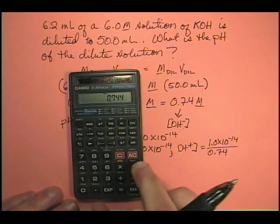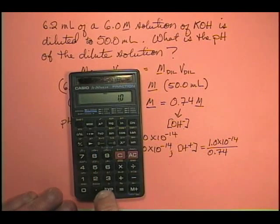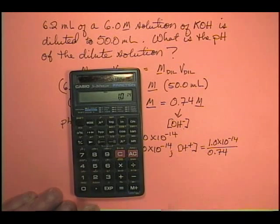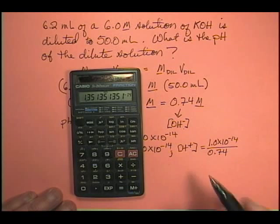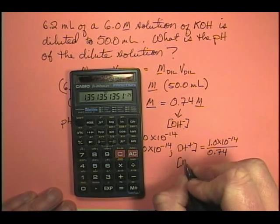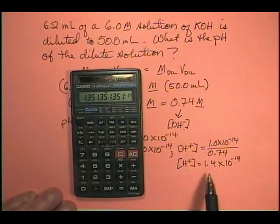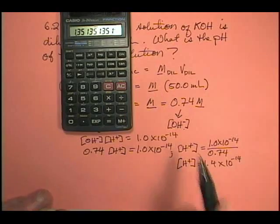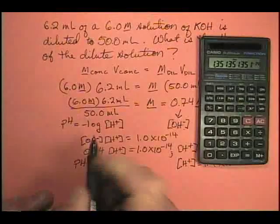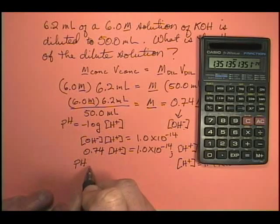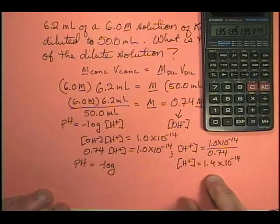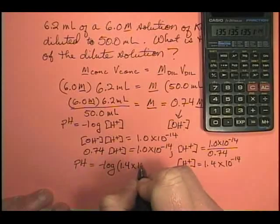Let's go ahead and calculate this. Using the EXP key on the calculator: 1.0×10⁻¹⁴ divided by 0.74 equals — my hydrogen ion concentration is 1.4×10⁻¹⁴. That's smaller than 10⁻⁷, so we're reasonable. Always apply these checks. Now let's figure out our pH. The pH equals the negative log of the hydrogen ion concentration, so it's the negative log of 1.4×10⁻¹⁴.